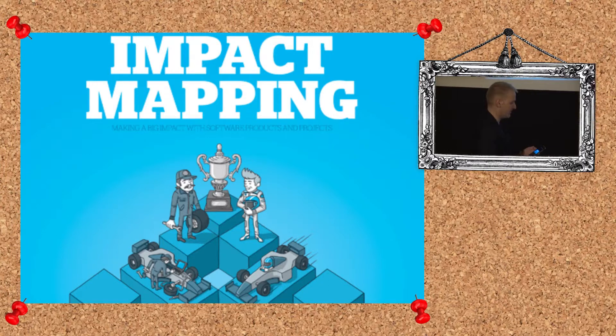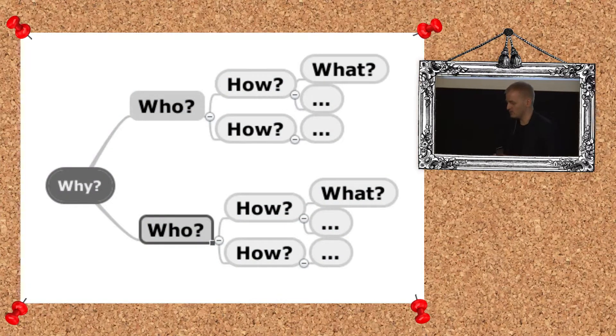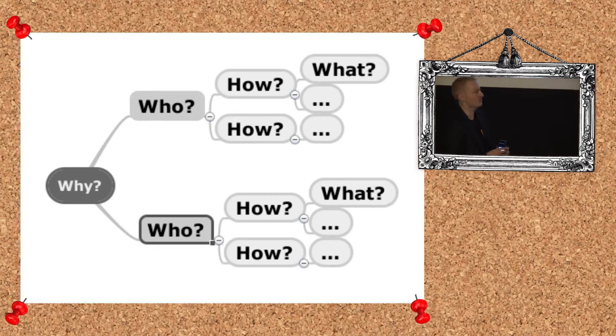So the first thing is impact mapping. A short reminder for people. Impact mapping is a way to think about planning and prioritization and brainstorming. That assumes that first you have to define at the center of the map, you have a goal. And it's good that it is a kind of a quantified goal, very precisely stated what you want to achieve. And then you don't just jump into solutions. First, you think about who can impact this goal. So for example, if you want to increase sales, whose behavior has to change for us to achieve our goal.